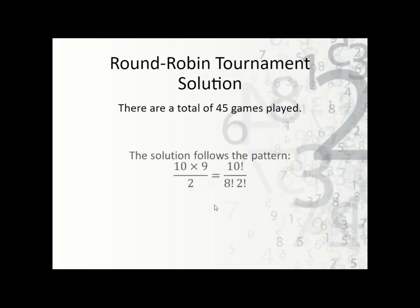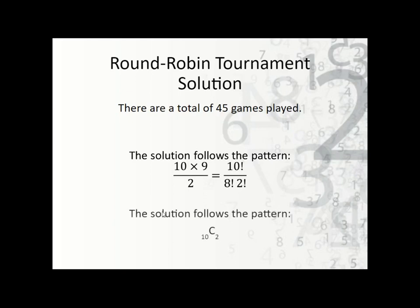Solution: there are exactly 45 games played. We know that by using combinations. If you remember back to probability, we can use combinations: 10 times 9 over 2, or 10 factorial over 8 factorial times 2 factorial, because we're doing 10 choose 2 — that's 10 factorial over (10 minus 2) factorial times 2 factorial. Another way to write it is 10 choose 2 using the combination notation.